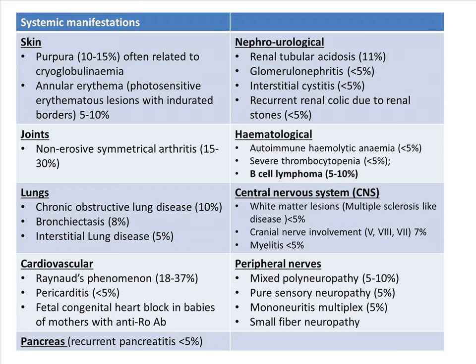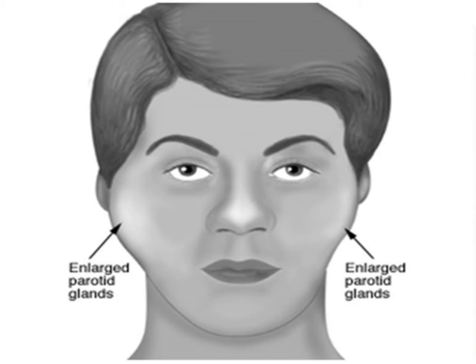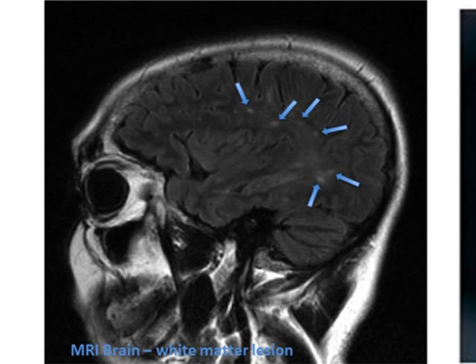Here are some pictures showing clinical involvement of Sjogren's syndrome. The first picture shows enlarged parotid glands, which can be unilateral or bilateral. The second picture shows a papillated tongue as well as angular cheilitis due to inflammation of the salivary gland causing xerostomia. The third picture shows white matter lesions found on MRI brain scan. Some individuals will also present with skin purpura, as shown in the pictures.